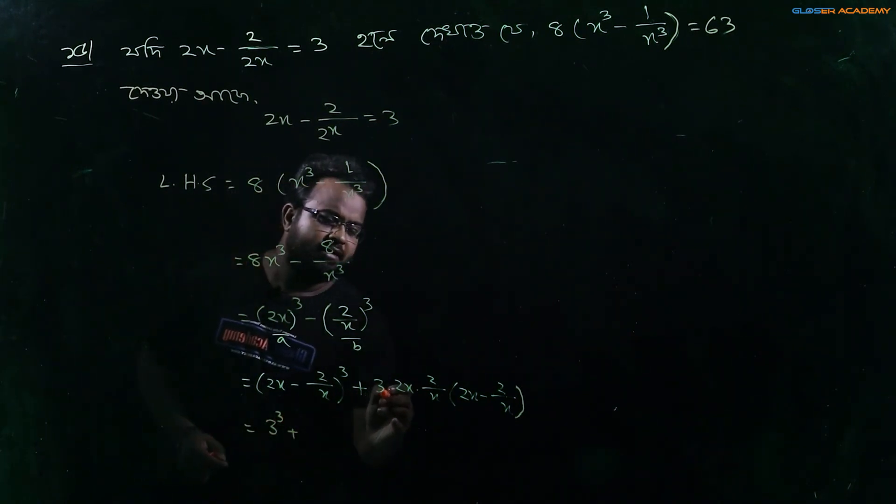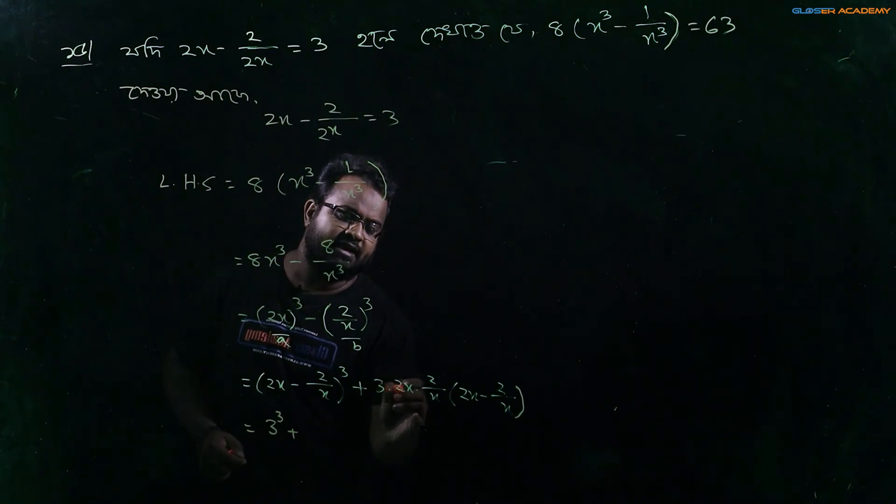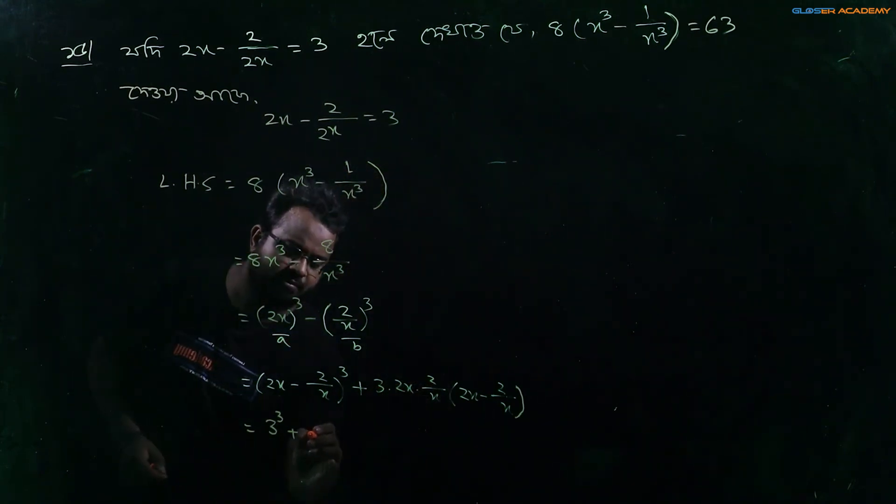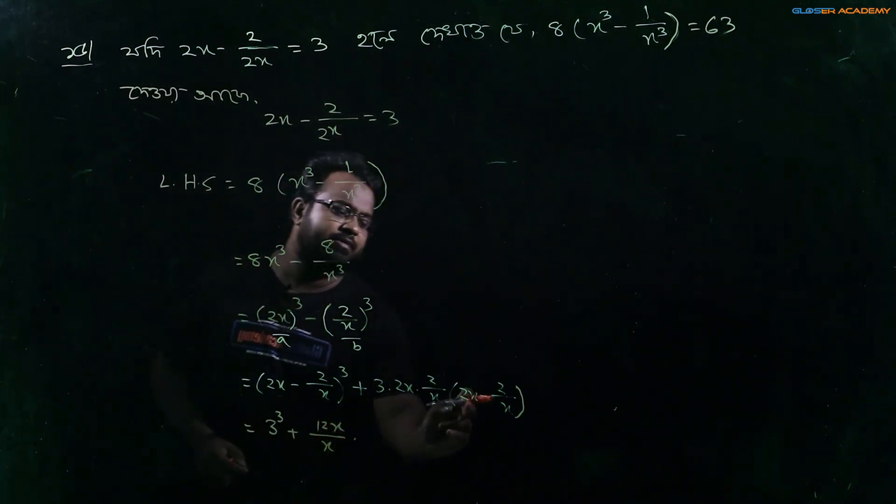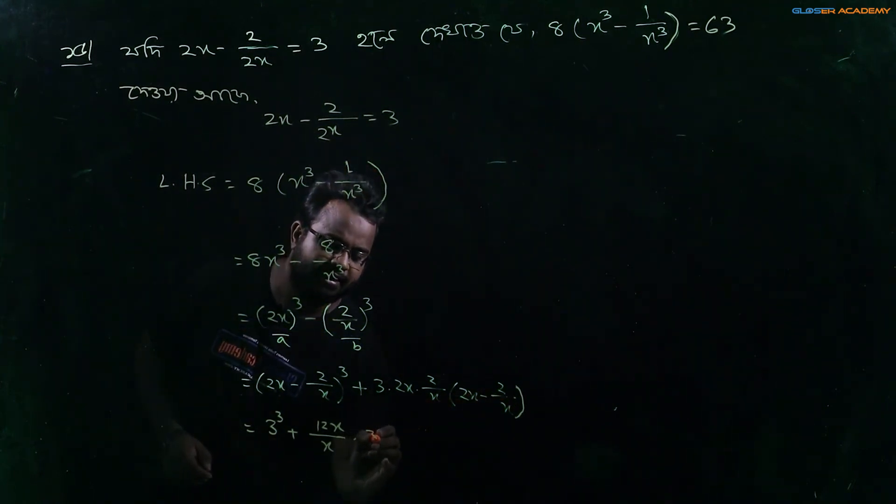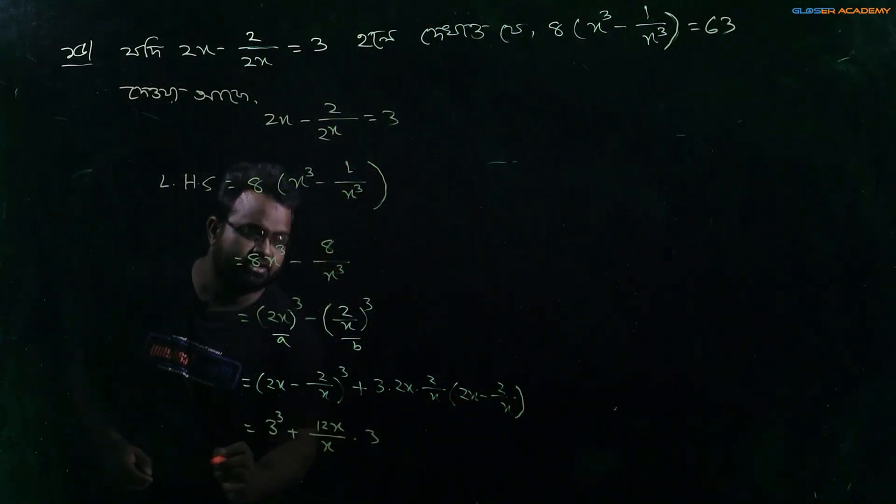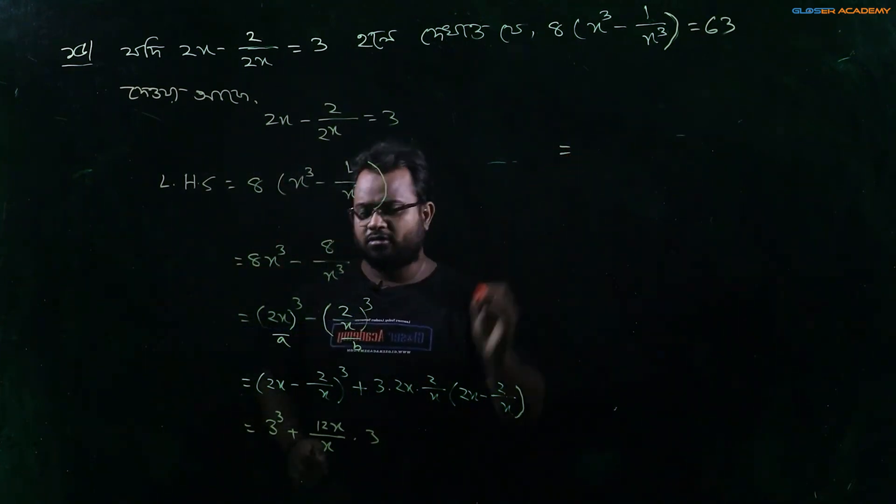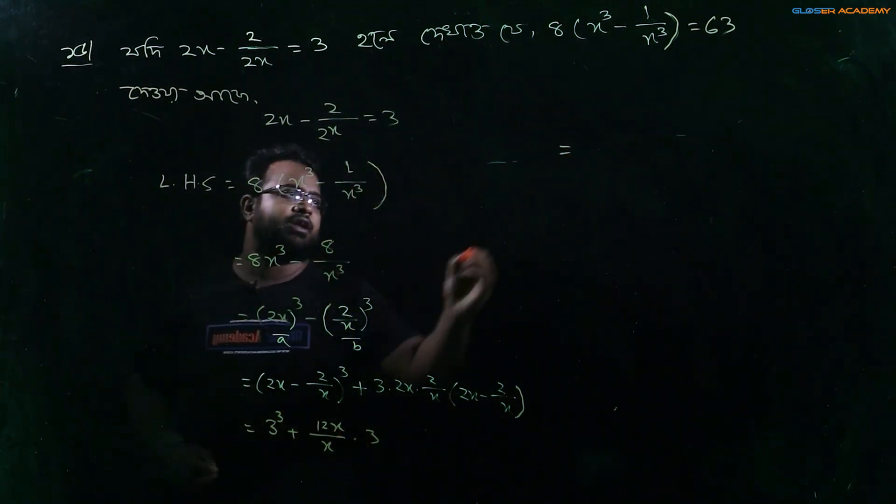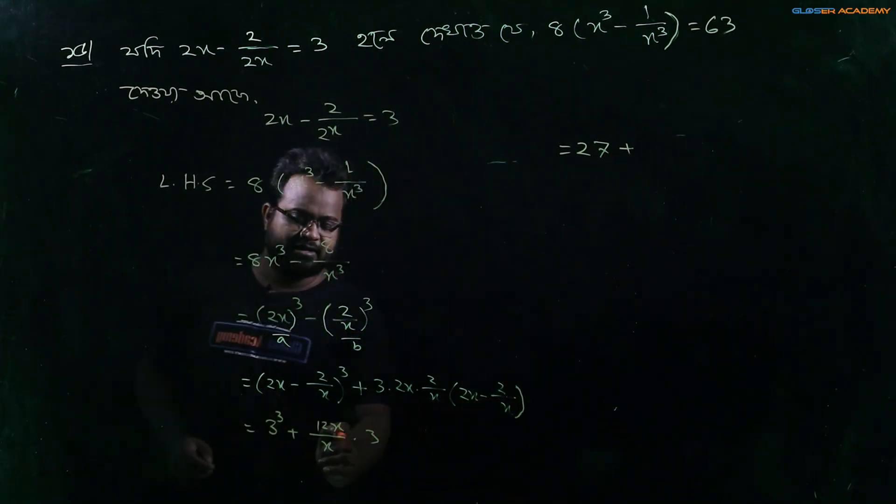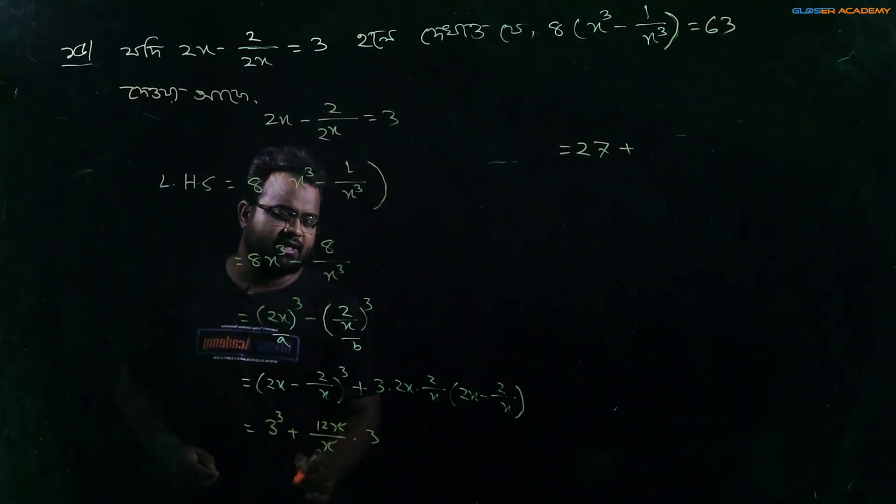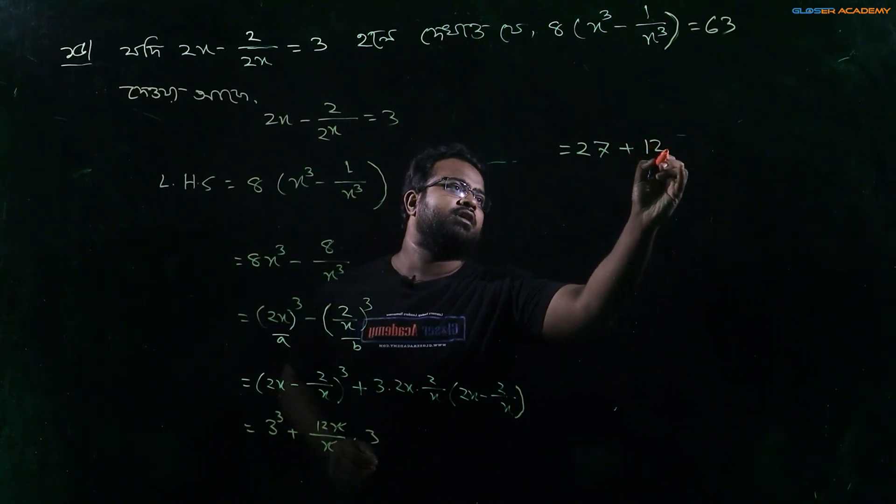So we have over 12x and we look at x into 2x minus 2 is at least 3. So when we look at the 3 cube, this is 27 plus, when we cut this x and x, this is 12 into 3.